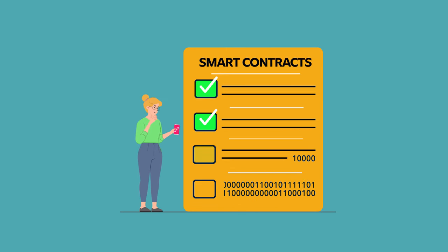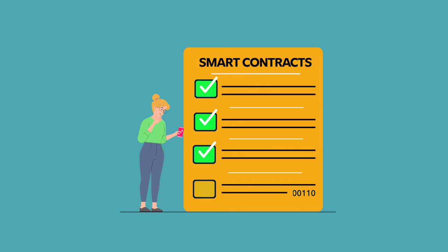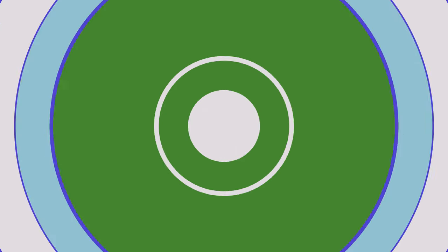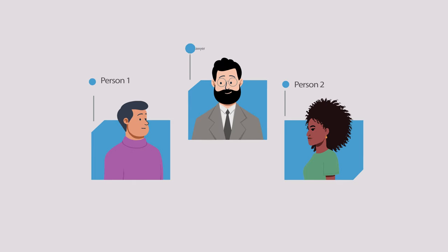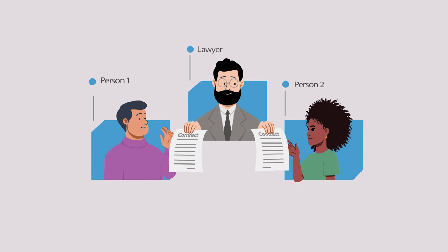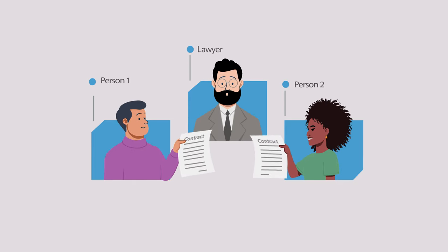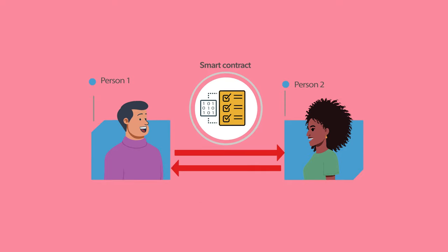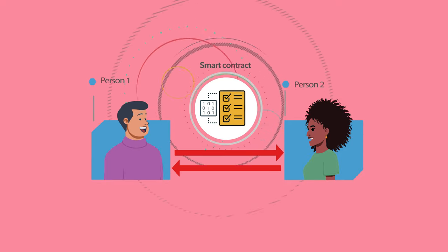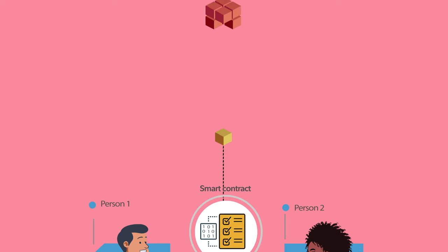Simply put, contracts are agreements that usually need a third party, like a lawyer, to authorize and ensure both parties are holding up their end of the terms. But 'smart' refers to their digital existence, automated nature, and independence from a third party.